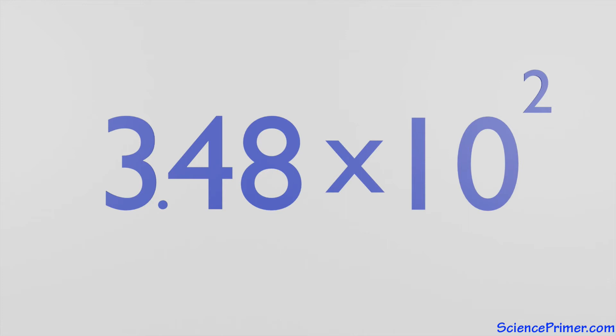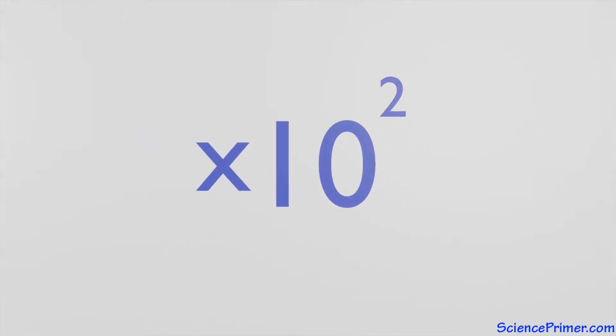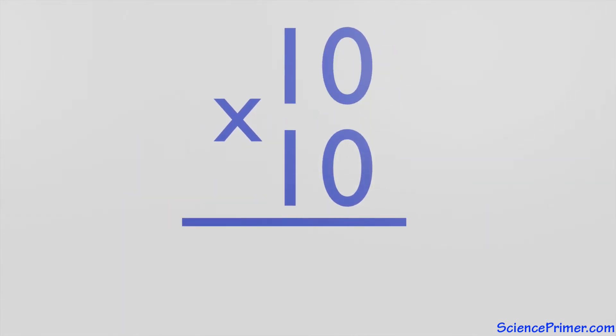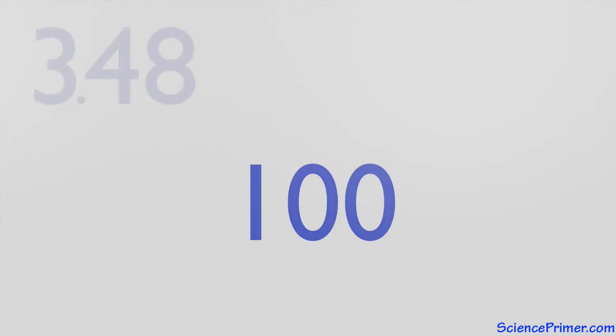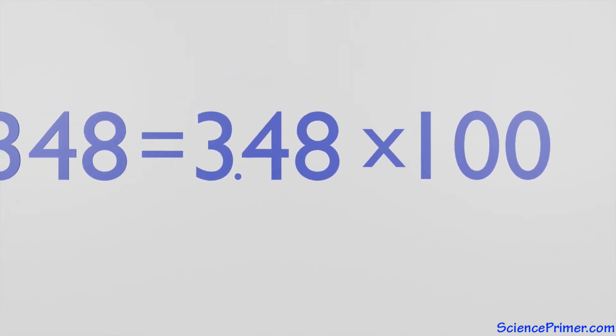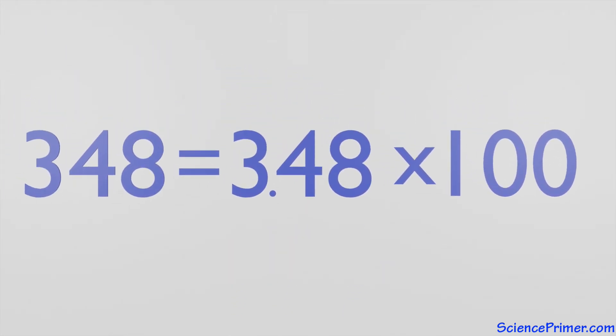To understand why this is an accurate representation of the original number, remember that 10 raised to the power of 2 is 10 times 10, which equals 100. So what the expression 3.48 times 10 to the 2 is really saying is 3.48 times 100, which equals the original number 348.